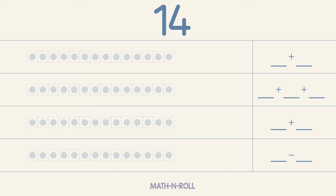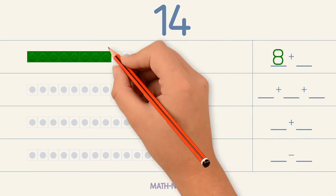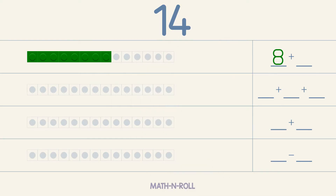Let's pick any number less than 14. Let's say 8. Using the model, we see that we need 6 more pieces to add to 8 to make 14. So 8 plus 6 equals 14.